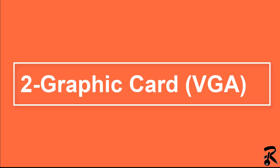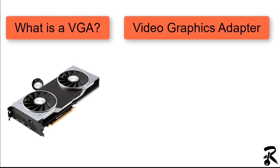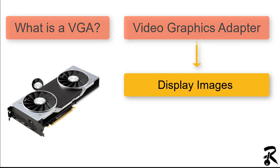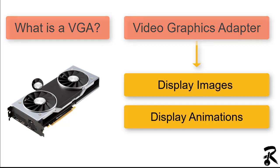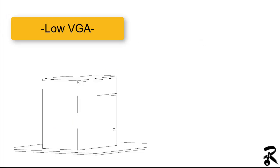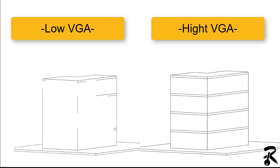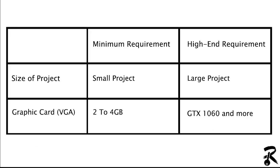Let's move to the second factor: the graphic card or VGA. Graphic cards — VGA stands for Video Graphics Adapter — are used to support high-intensity graphic applications like Autodesk Revit. You can see the difference between low and high VGA in a 3D model: many lines disappear in the case of low video card graphics. I recommend for a small project to go for 2 to 4 GB, and for a larger project to go for a GTX 1060 or more.